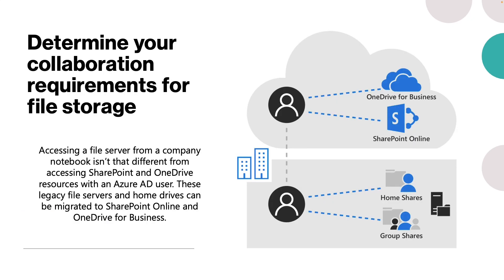The next step is to determine your organization's collaboration requirements for file storage. Collaboration and file storage is made easier with Microsoft 365 by using two key services: OneDrive for Business and SharePoint Online. These services can provide great opportunities to create a resilient and reliable file storage strategy. Microsoft 365 includes a basic team site to get started, and you can immediately begin storing files in OneDrive for Business and collaborating on files in your team site. You can manage your OneDrive for Business to monitor space usage and free up space if you are approaching your storage limit. While you can upload almost any file format, some files may not be allowed for two reasons: security and invalid characters in file names.